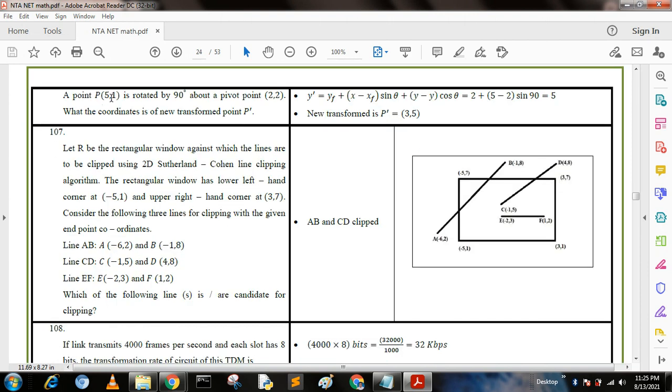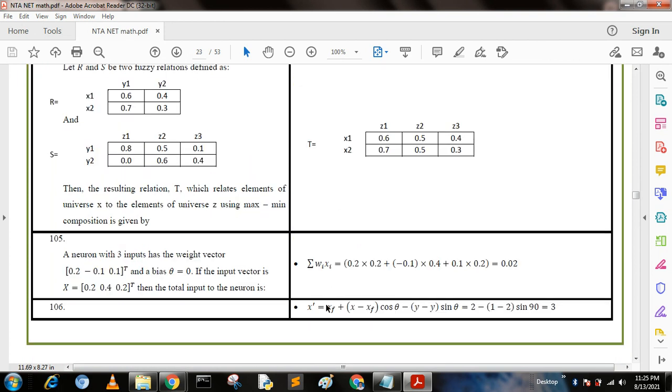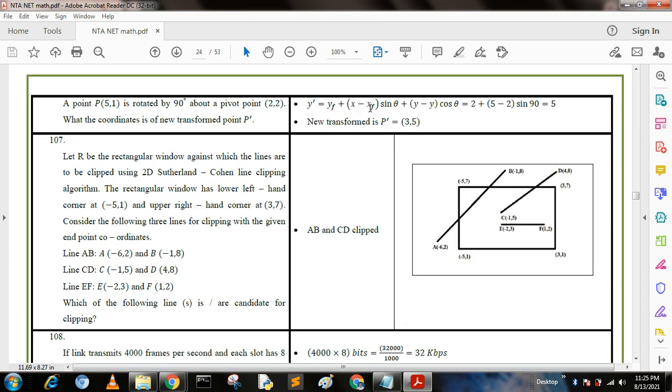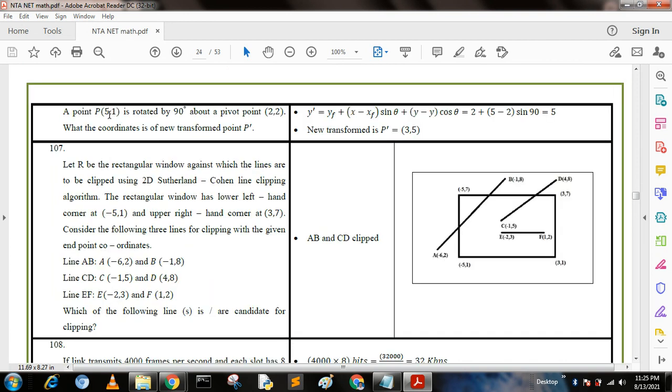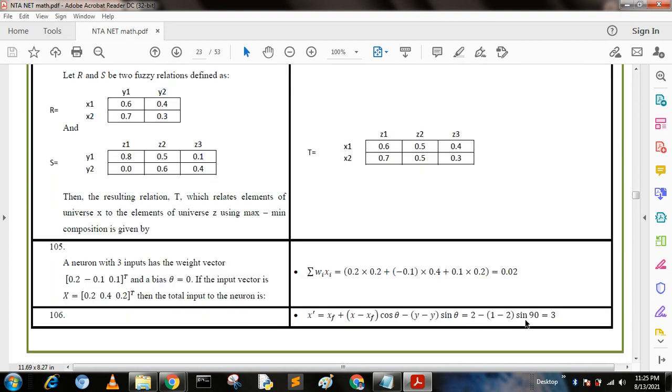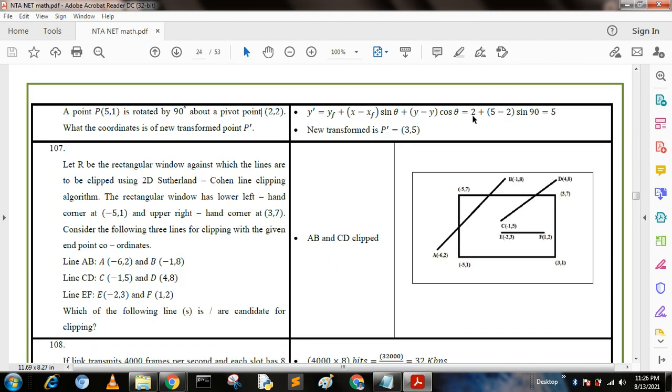Next question, Question 106: A point P(5,1) is rotated by 90 degrees about a pivot point (2,2). What are the coordinates of the transformed point P dash? We know the formula: x dash equals xf plus (x minus xf) cos theta minus (y minus yf) sine theta, and y dash equals yf plus (x minus xf) sine theta plus (y minus yf) cos theta. We put the values where x is 5, y is 1, theta is 90 degrees, and the pivot point xf, yf is (2,2). After calculation we get P dash equals (3,5).